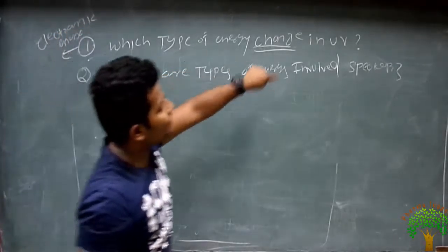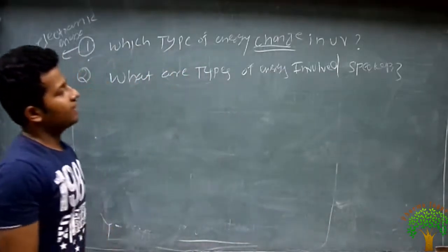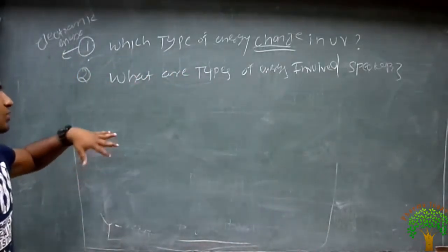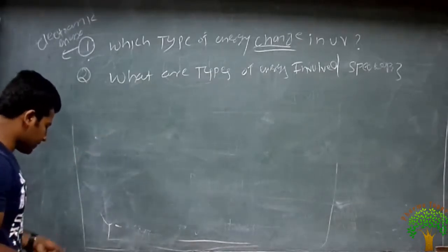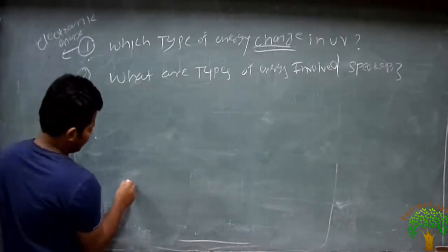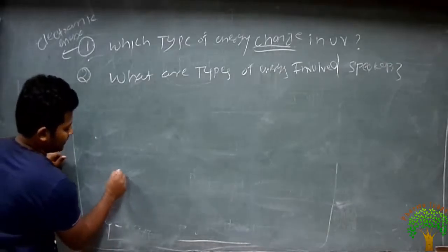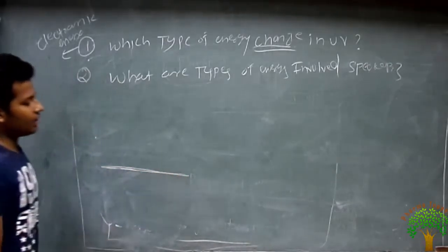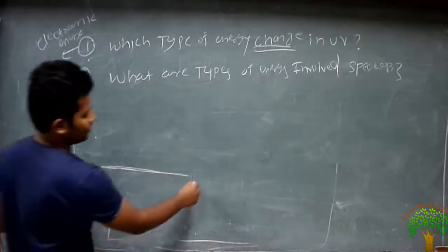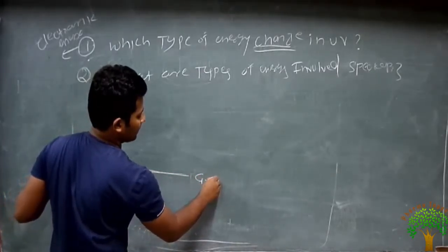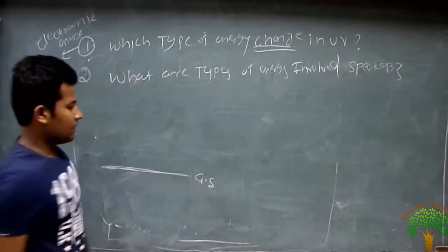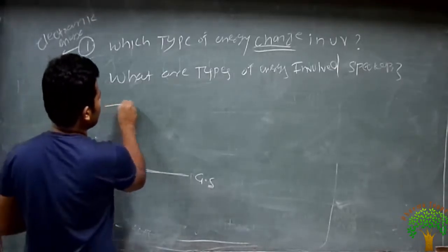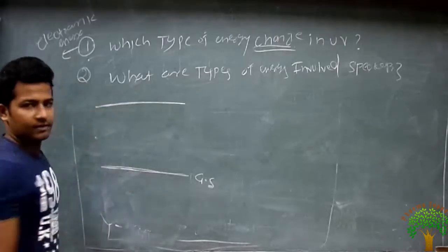What are the types of energy involved in UV spectroscopy? To solve this question, take an example in UV spectroscopy. Suppose this is our diatomic atom in the ground state. After absorbing some energy, it goes to the excited state.